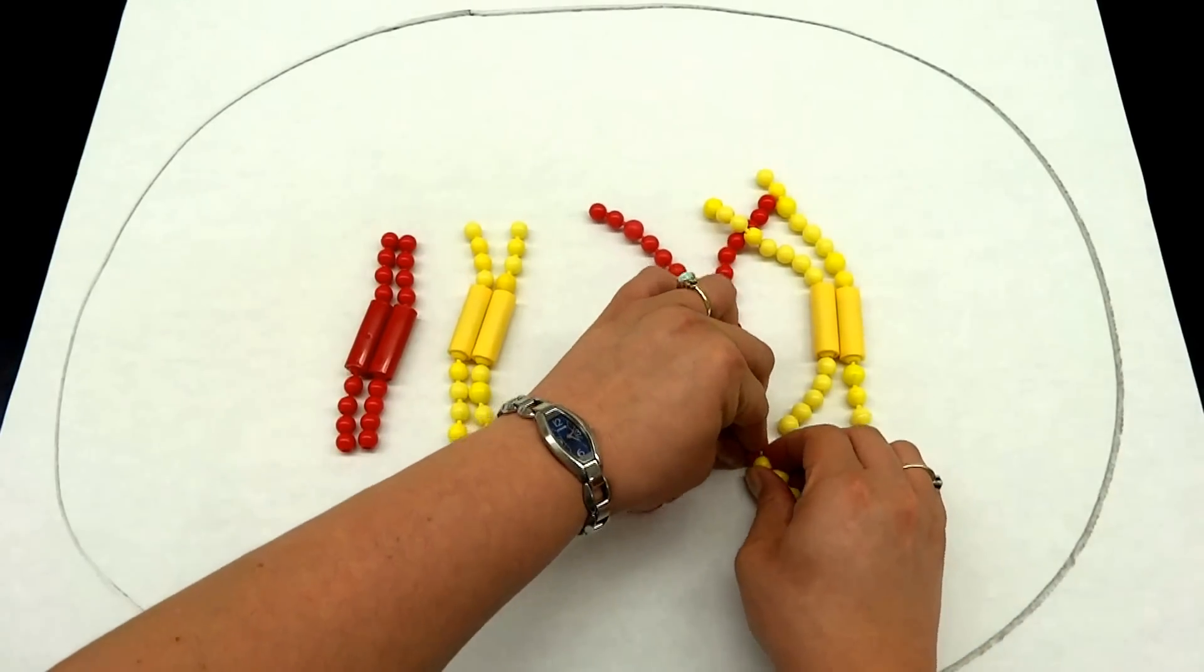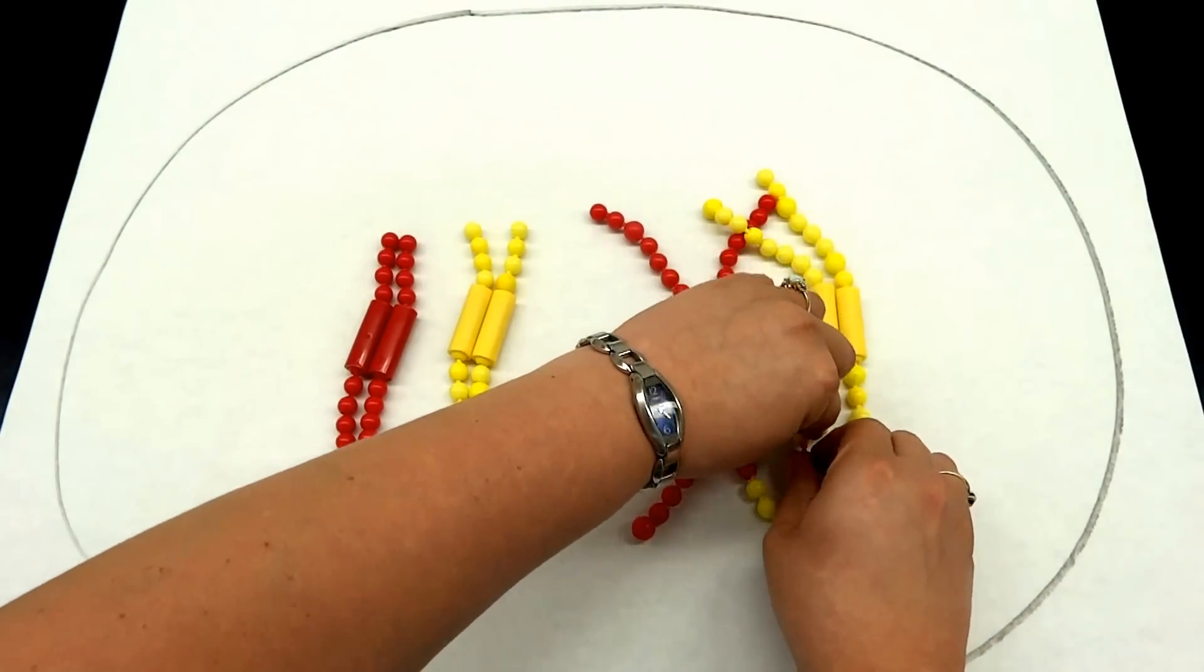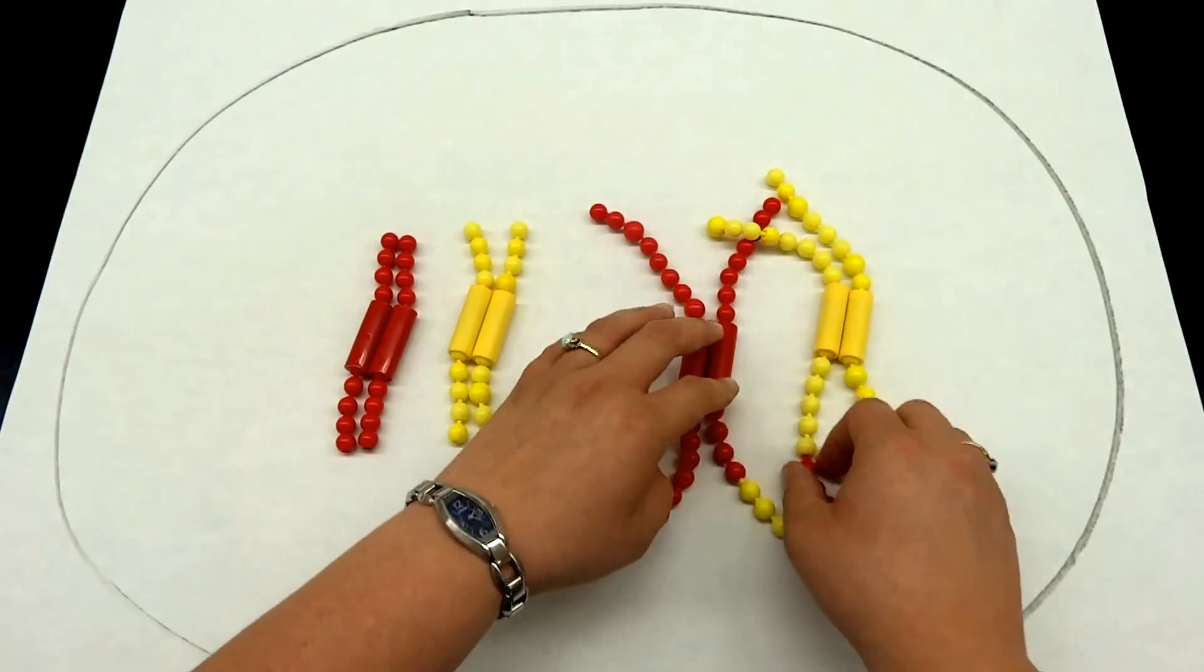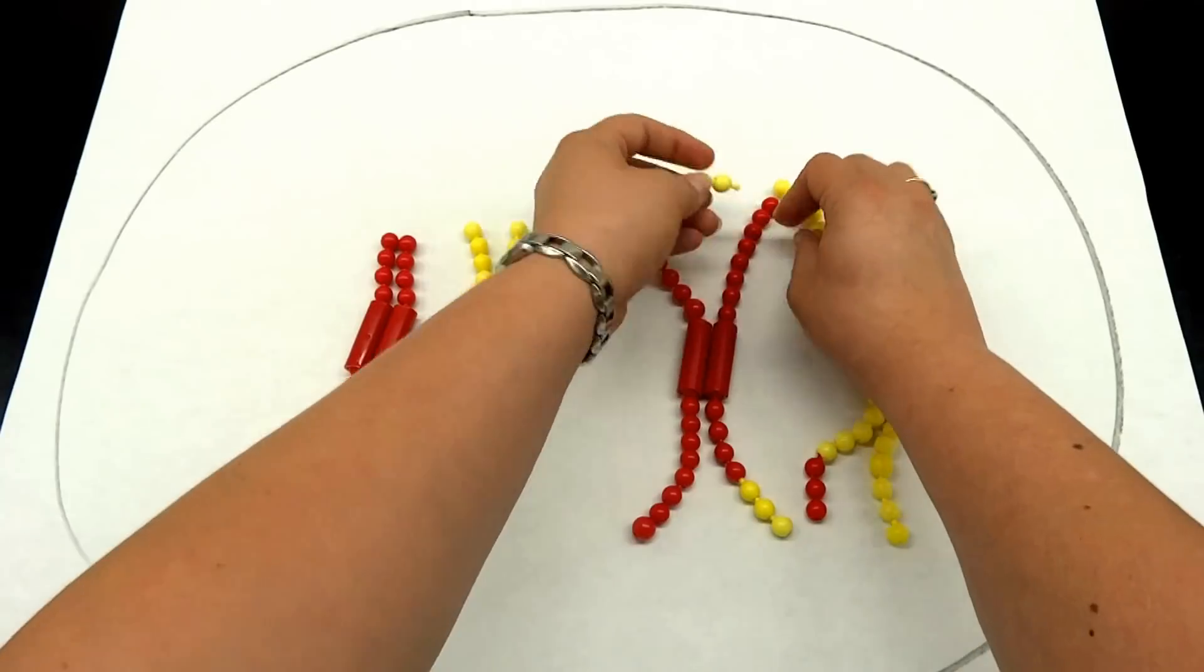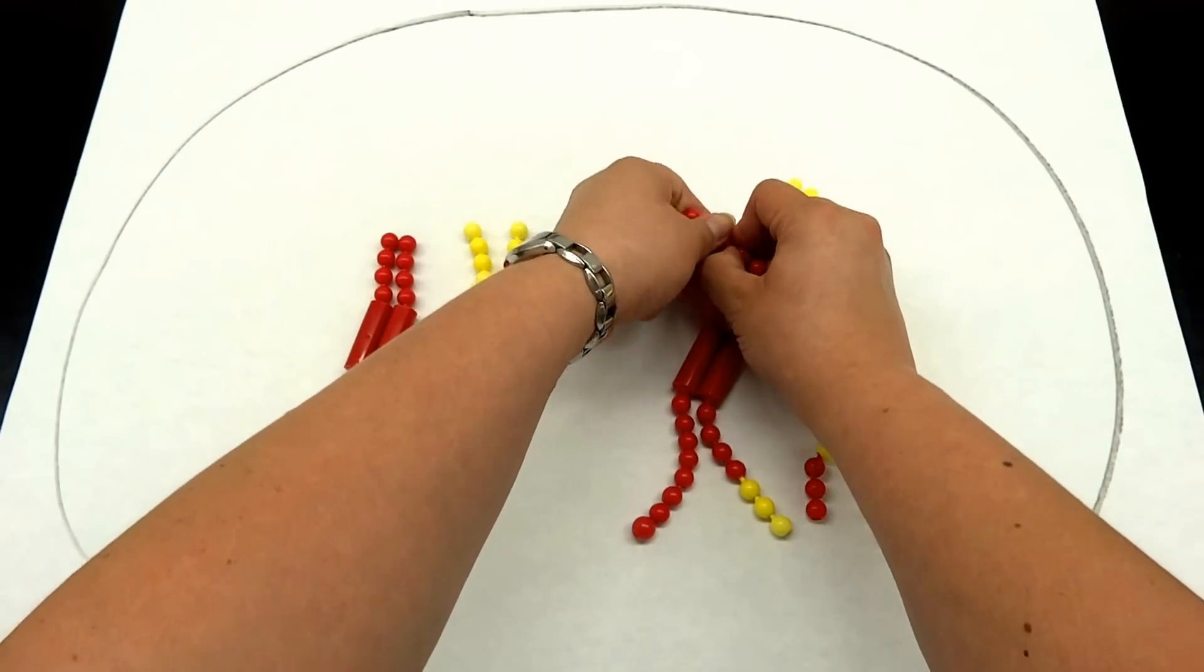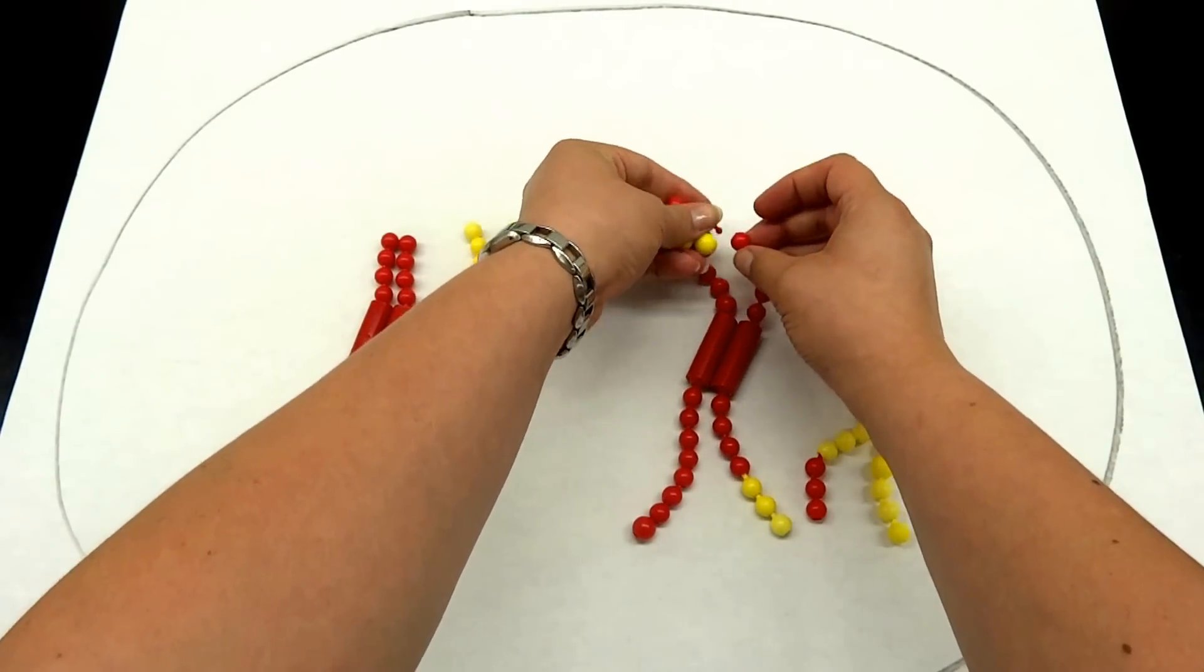That will give us a relatively unique chromosome. If we do that on the other side again, let's go ahead and do three red and three yellow.